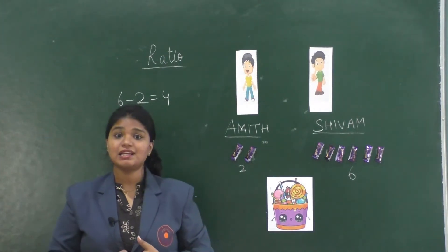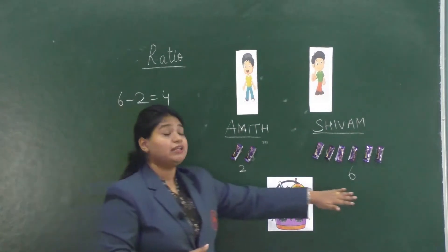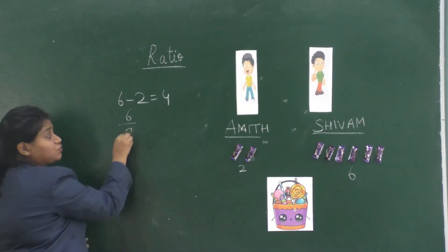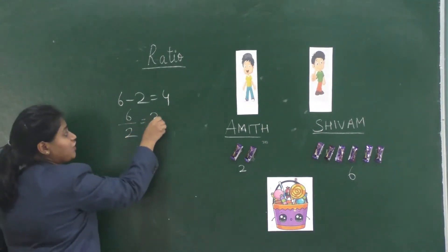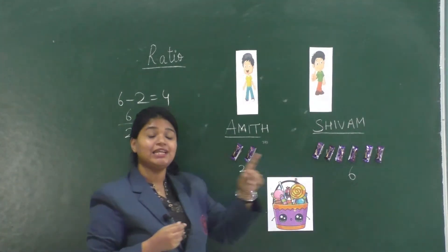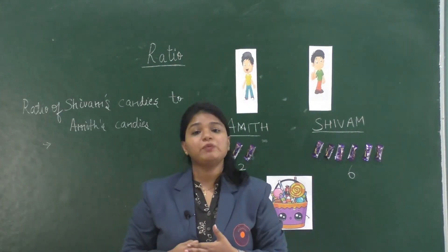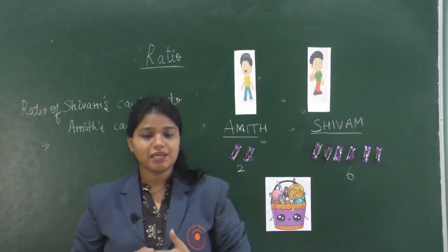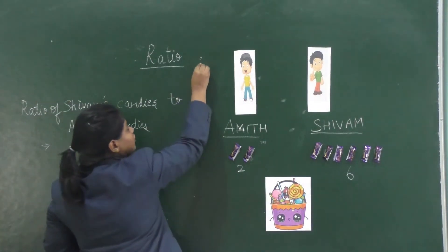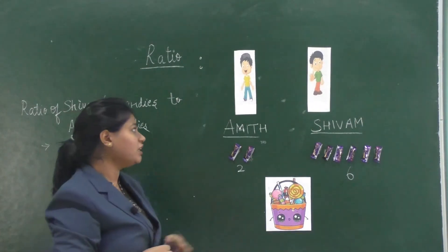Is there any other way to compare the candies? Let's compare using division. When we divide six by two we get three, so we can say that Shivam has three times more candies than Amit. When we compare two quantities of the same kind using division, it is known as ratio.